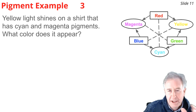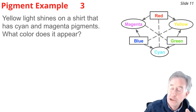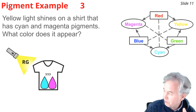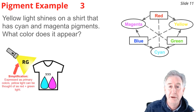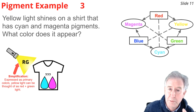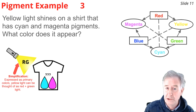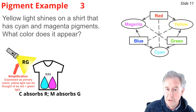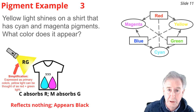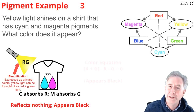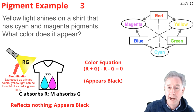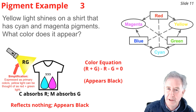Example three: yellow light shines on a shirt with cyan and magenta pigments. Yellow light is red + green. The cyan absorbs red, and the magenta absorbs green — that's all the light present. Nothing is left to reflect. Color equation: (R + G) − R − G = 0. The shirt looks black.